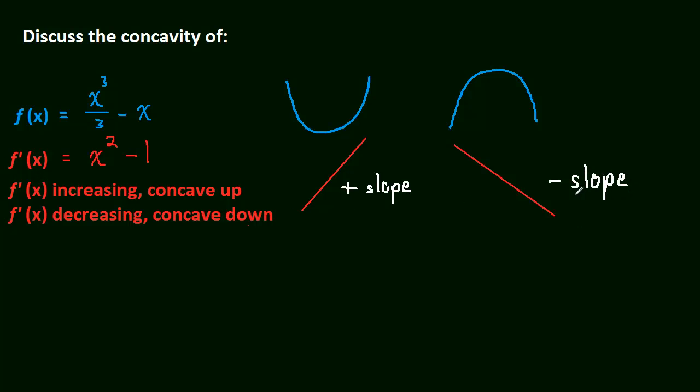So we're talking about the slope of the derivative. No longer are we talking about the slope of the actual function. We're talking about the slope of the derivative. So to find the slope of the derivative, we need something called the second derivative. And it's nothing fancy. It's just the derivative of the derivative. So the derivative of x squared minus 1 of our derivative, that's pretty easy. That's just going to be equal to 2x.